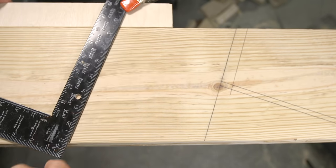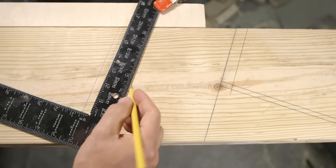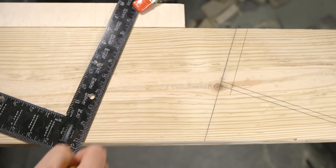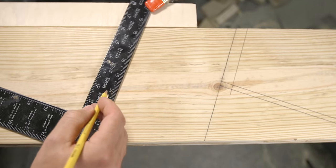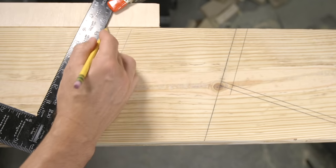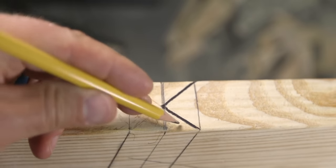Again, because this is a hip rafter, this cut needs to have a double bevel cut just like at the top. So, like before, we're going to measure three-quarters of an inch on either side and draw two lines. Remember, once both lines are cut at a 45-degree bevel, the center line will end up being the tip of those two bevels.